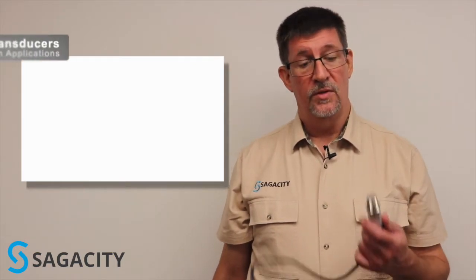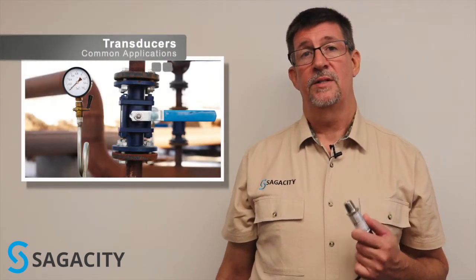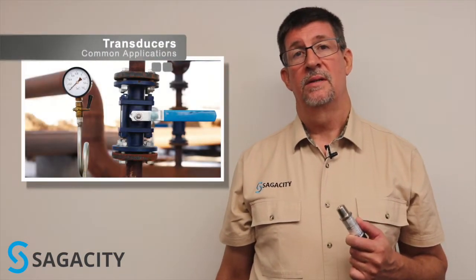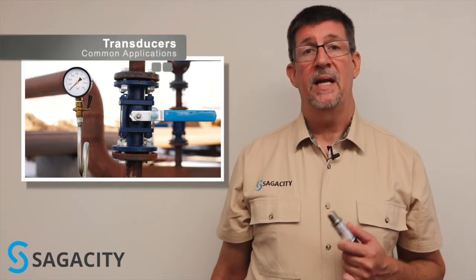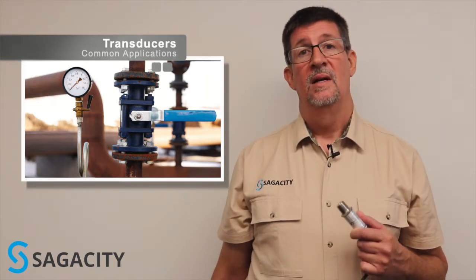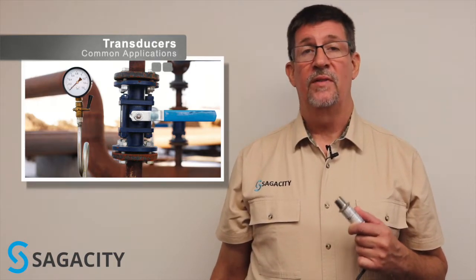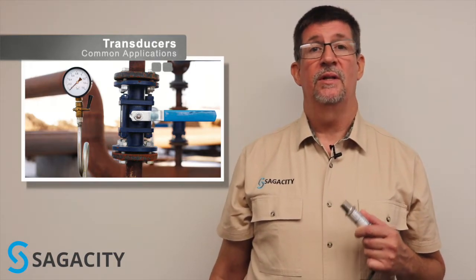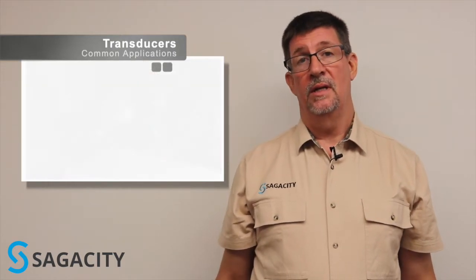Applications for transducers, which are typically a fixed range device, would be applications where you don't have process variables changing in the future. A lubrication skid, for example, where you know you have to have 40 or 50 pounds of pressure in order to keep the lubrication of your equipment going.